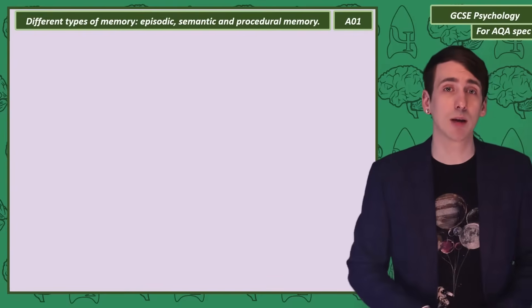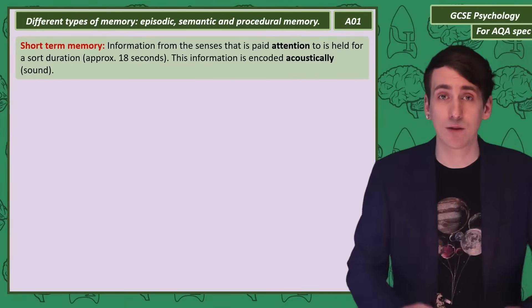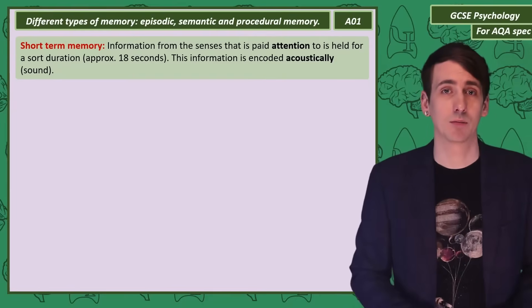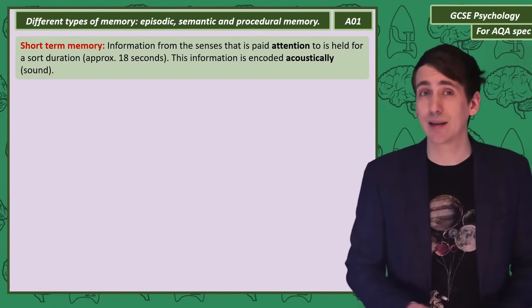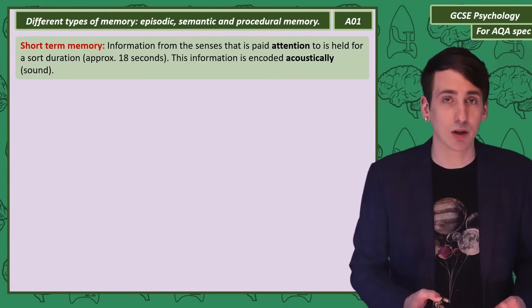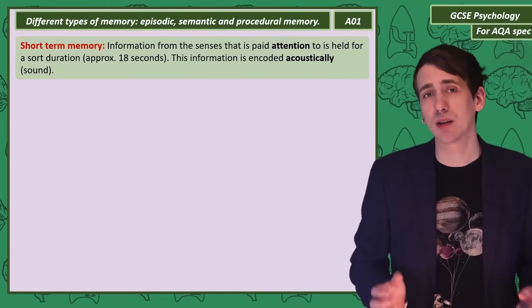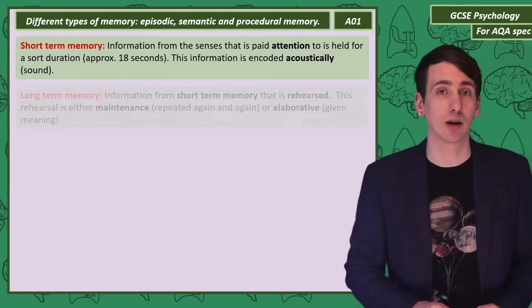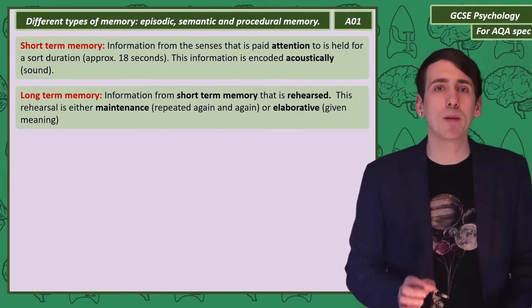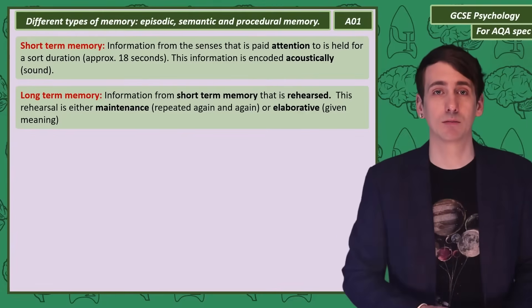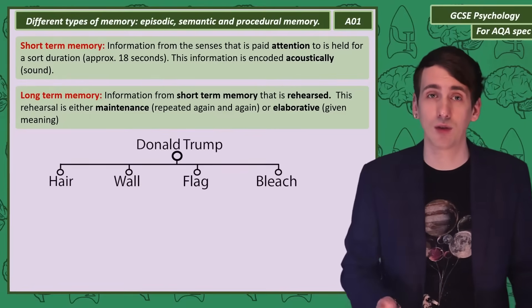Let's make a distinction between two types of memory: short-term memory and long-term. Lots of information comes into the senses every second, but you don't pay attention to most of it. What you do pay attention to is held in your short-term memory. It doesn't last long — about 18 seconds — and when you're holding it there, like a phone number, chances are your inner voice is repeating it, so acoustic encoding. Information in short-term memory can be put into long-term memory. You could rehearse information in short-term memory by saying it again and again — that's maintenance rehearsal — or by giving it meaning, known as elaborative rehearsal. What were the four words I put next to Donald Trump's name? Bleach, hair, wall, flag. Elaborative rehearsal.